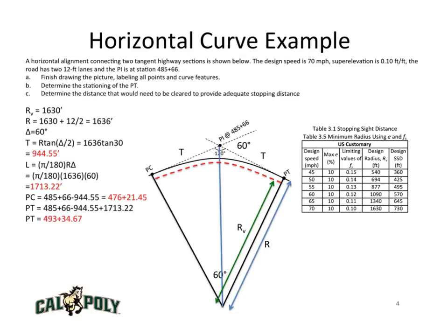Now we can perform a few calculations. First, we look at our table for stopping sight distance, which includes the minimum radius using particular superelevation and friction factors. If we look at 70 miles per hour for a superelevation of 10%, which is our situation, we can see that the design radius of the curve is 1,630 feet.